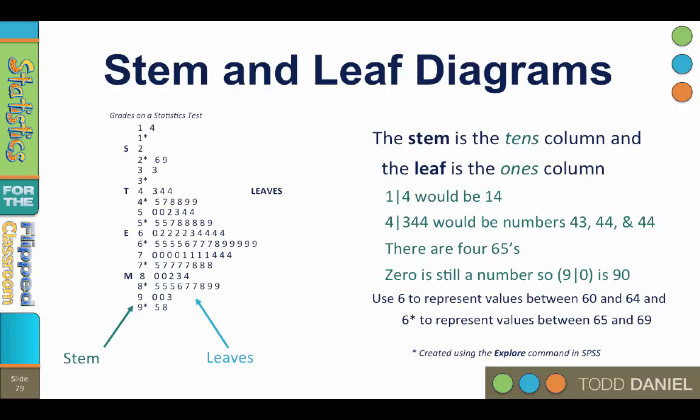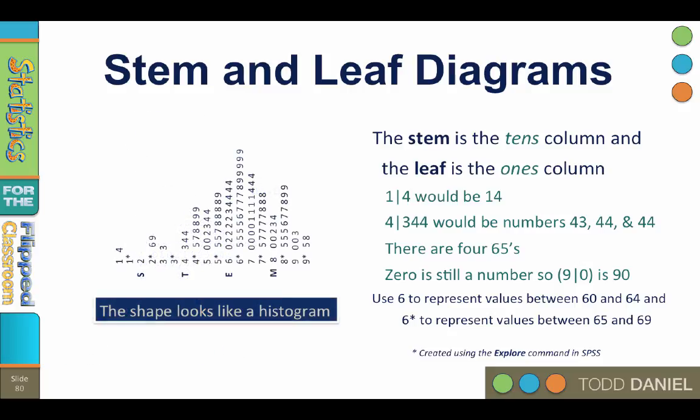Now finally, we want to see the shape of the data. To do that, we could turn the stem and leaf diagram on its side, and we have a histogram. We see both the shape of the data and we keep the individual scores.